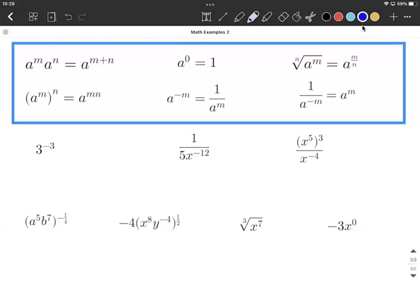We're going to simplify these expressions, rewriting them so they all have positive exponents and simplifying completely. We're also going to rewrite a radical as a rational exponent. You can see we have our exponent rules up at the top.